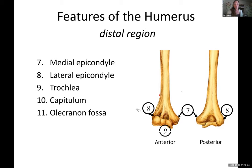These bottom knobby features — we have the trochlea, which looks kind of like a spool of thread if you have a good imagination. It's like a sideways spool — wider, then narrow, then wider — so it literally is a hinge surface. That is the trochlea.